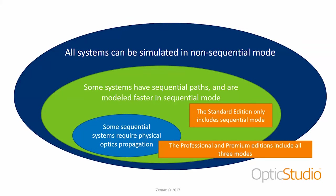OpticStudio started as ZEMAX and originally the only mode was sequential mode, due to the computational power available at the time. Now, the standard edition of OpticStudio is sequential mode alone, while both the professional and premium editions include all three modes. For all three modes, we have analysis features, optimization features, and tolerancing features. Even our standard edition includes analysis, optimization, and tolerancing — the limitation is that it's just for sequential systems.